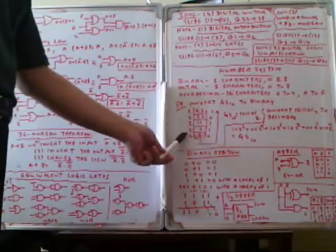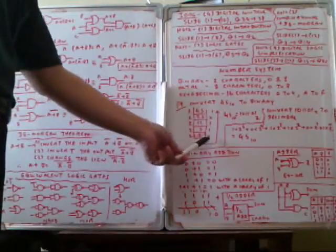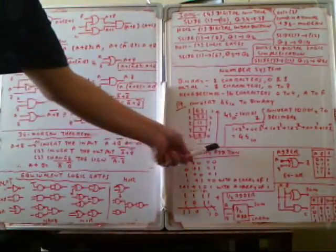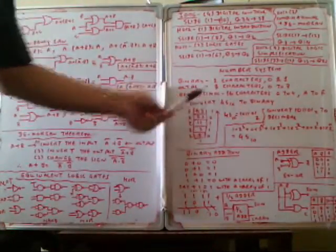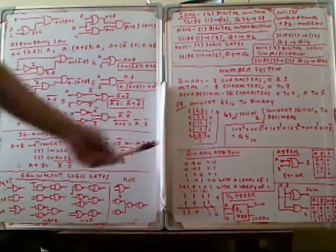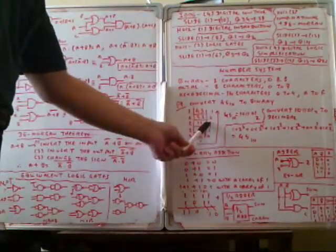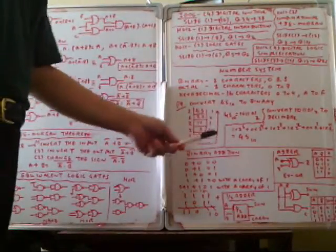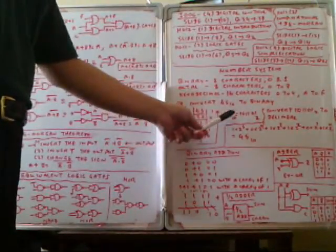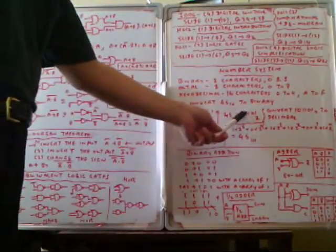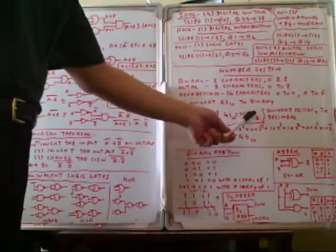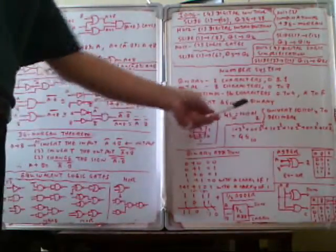2 divided by 2 gives 1 remainder 0. Reading the remainders from bottom to top, we get 101101. Therefore, 45 in base ten equals 101101 in base two.